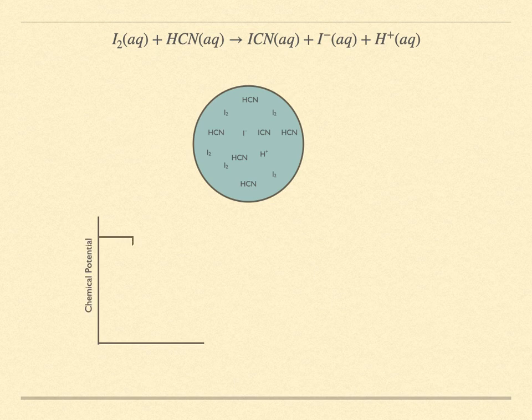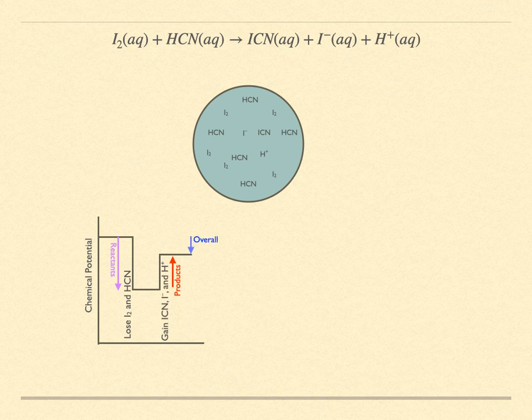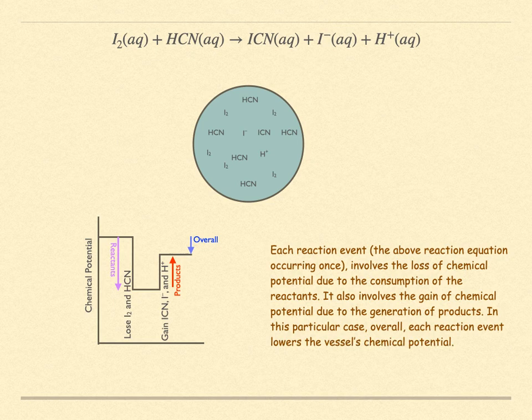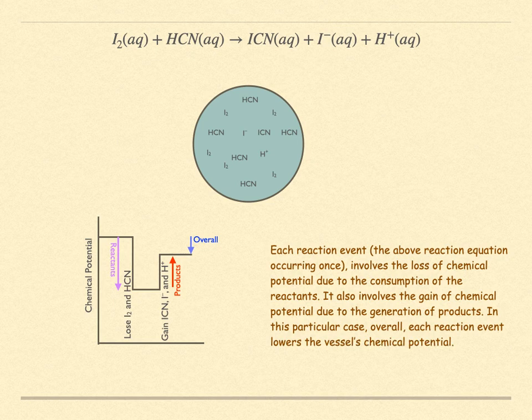If the overall chemical potential has been lowered by this reaction event, then the loss of chemical potential as the reactants combined was greater than the gain in chemical potential by the appearance of the products. When this condition applies, then the same reaction occurs again. This continues. The reaction proceeds. Each reaction event involves the loss of chemical potential due to the loss of reactants and the gain of chemical potential due to the generation of products.